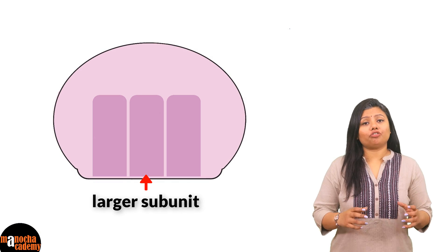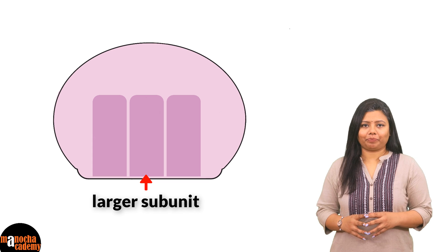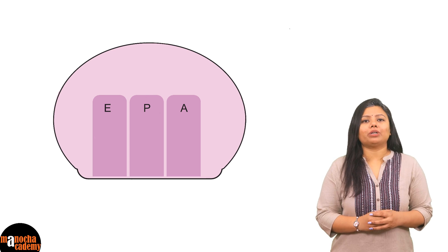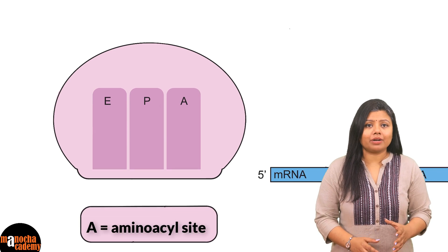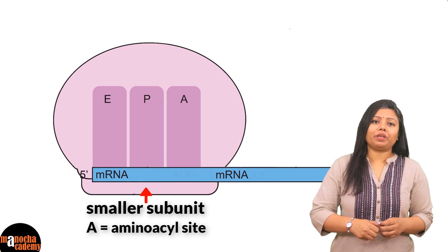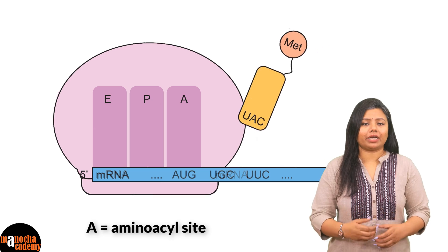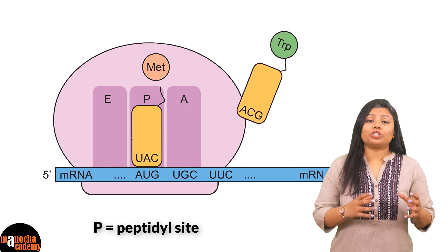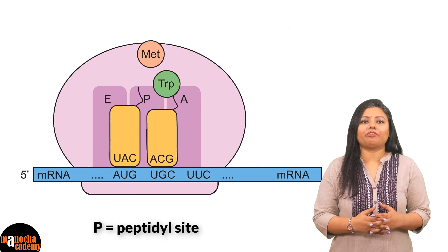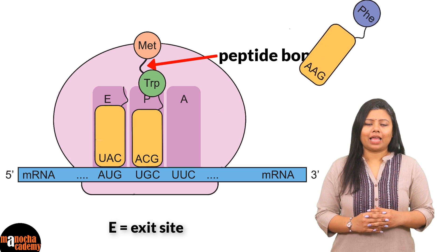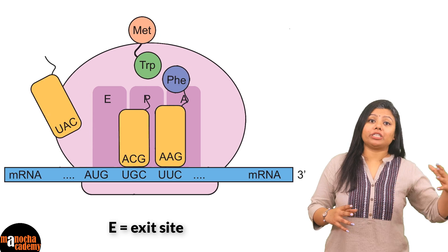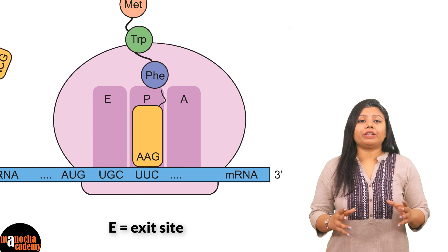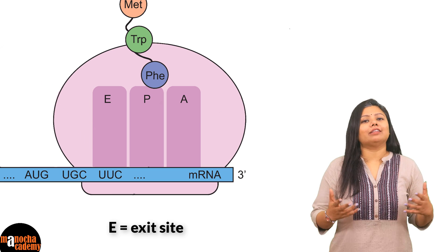The larger subunit has three three-dimensional cavities: the A site (aminoacyl site), the P site (peptidyl site), and the E site (exit site). The A site is a tunnel where transfer RNA enters with its amino acid when the messenger RNA presents the genetic code. The P site is responsible for carrying out the catalytic reaction during peptide bond formation between two amino acids. The E site is where the transfer RNA moves before exiting the ribosome after donating its amino acid. Together, these three sites give the ribosome its protein-synthesizing capacity.